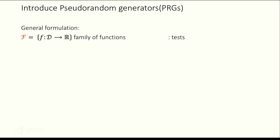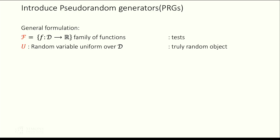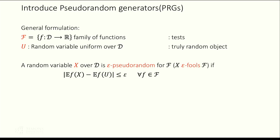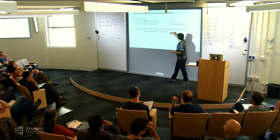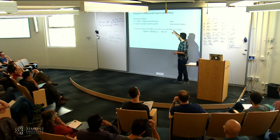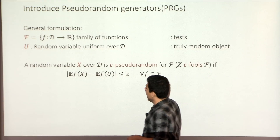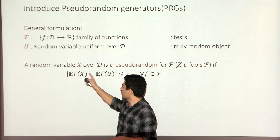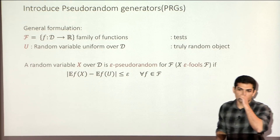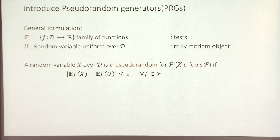You can think of these as a class of tests supposed to test something. We have the totally random object on this domain, which is just the random variable taking uniform values. We have another random variable x defined on domain d. We call x epsilon-pseudorandom, or say x epsilon-fools this class, if for every function in the family, the average of the function applied to x is very close to the average on a uniform random variable.